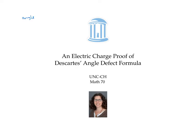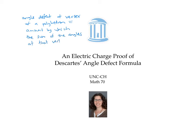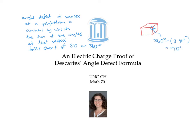In class, we defined the angle defect at a vertex of a polyhedron as the amount by which the sum of the angles at that vertex falls short of two pi or 360 degrees. For example, the angle defect at the vertex of a cube would be 90 degrees, because 360 degrees minus three times the 90-degree angles in the faces around that vertex equals 90. We defined the total angle defect as the sum of all the angle defects at all the vertices.